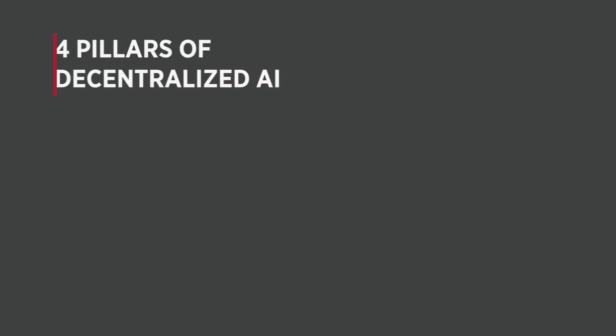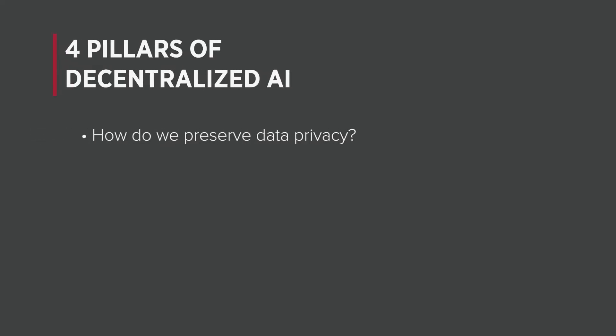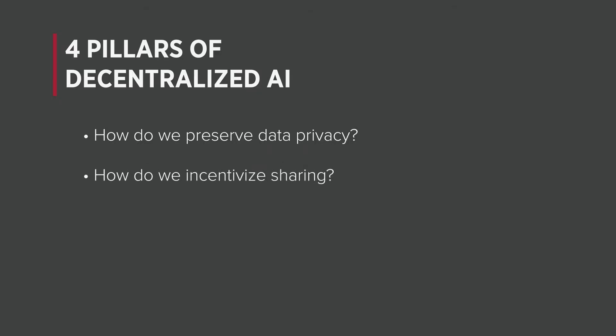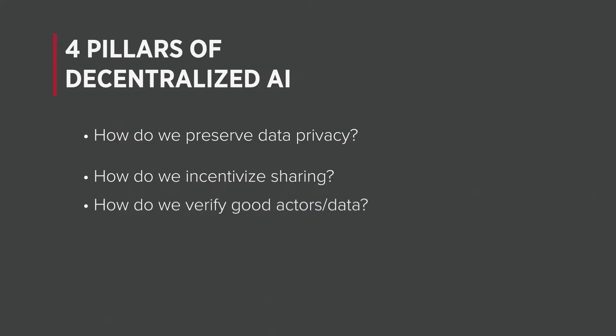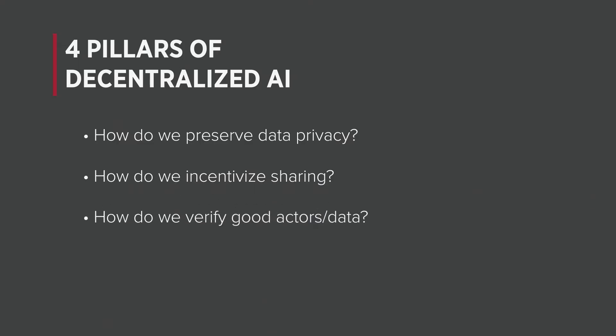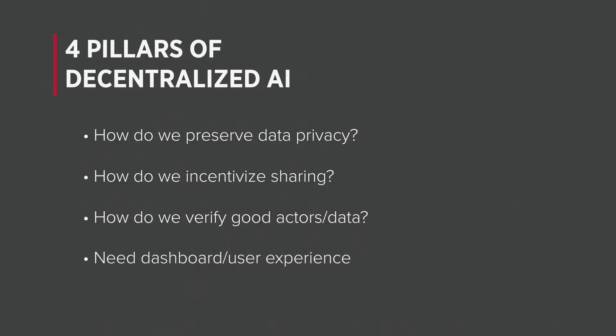To do that, we need to solve four major problems. The four pillars are: how do we create privacy-preserving machine learning; how do we incentivize these distrusted, disinterested entities to actually participate and share data and knowledge; how do you verify that they are good actors; and finally, we need some kind of a dashboard, some kind of a UX.